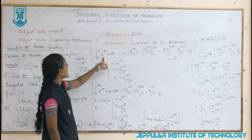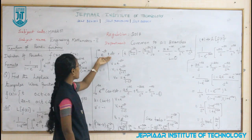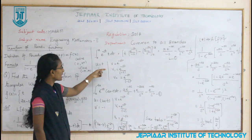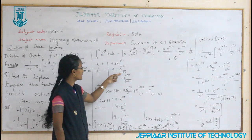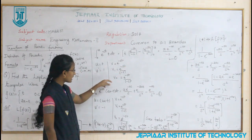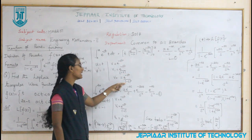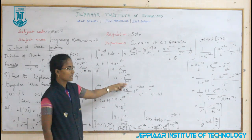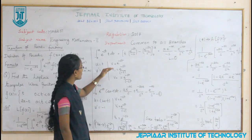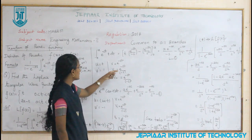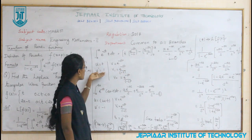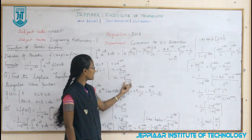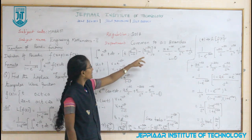We integrate e^(−st)·t dt from 0 to a. Since the function is a product, we use Bernoulli's formula. Setting u = t, differentiating gives 1. Integrating v = e^(−st) gives e^(−st)/(−s). Integrating again gives e^(−st)/(−s)², which equals e^(−st)/s². Applying the formula u·v₁ − u′·v₂, we get t·e^(−st)/(−s) minus 1·e^(−st)/(−s²), which becomes t·e^(−st)/(−s) + e^(−st)/s², evaluated from 0 to a.